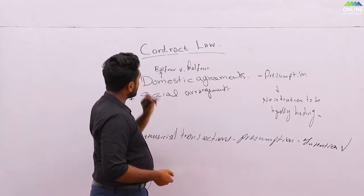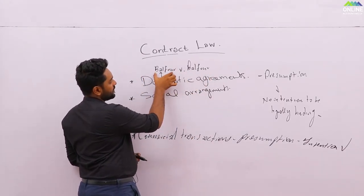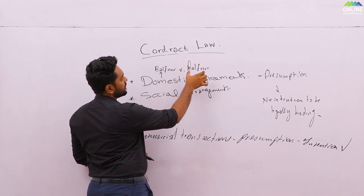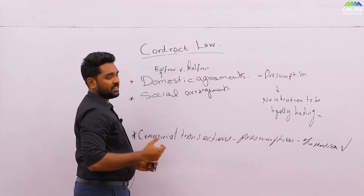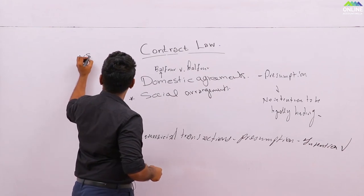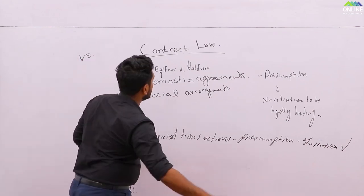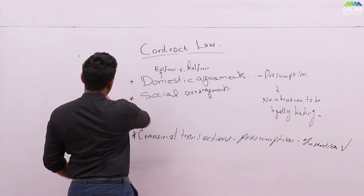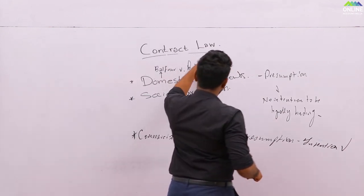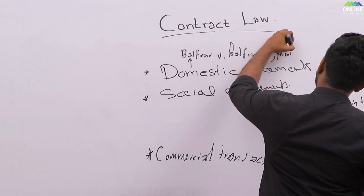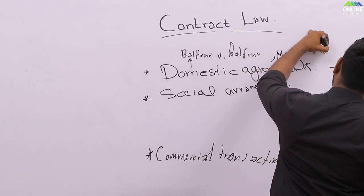The letter V in a case name represents the two parties. This is the person who filed the case, and this is the person against whom the case was filed. V means 'versus,' but in the legal context we write only the letter V, not 'vs.' So you read it as 'Belfer versus Belfer' and 'Merit versus Merit.'